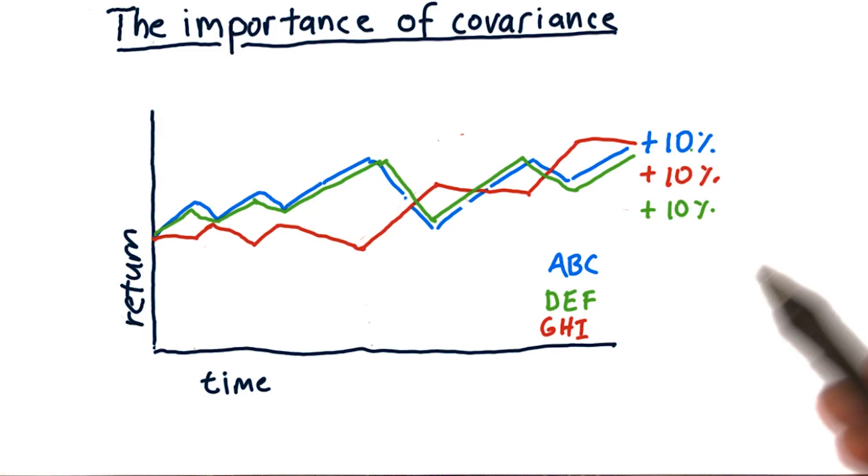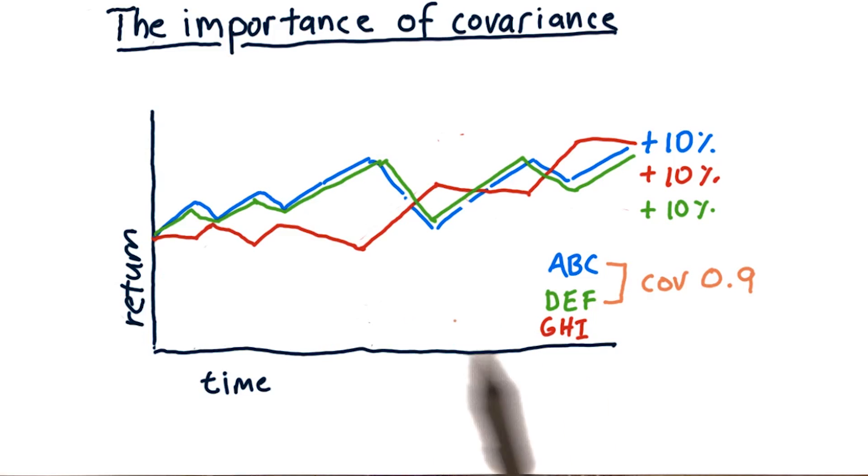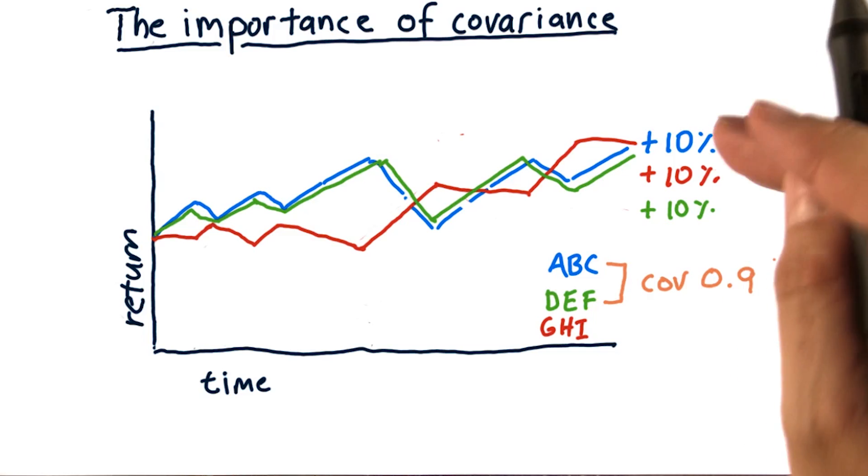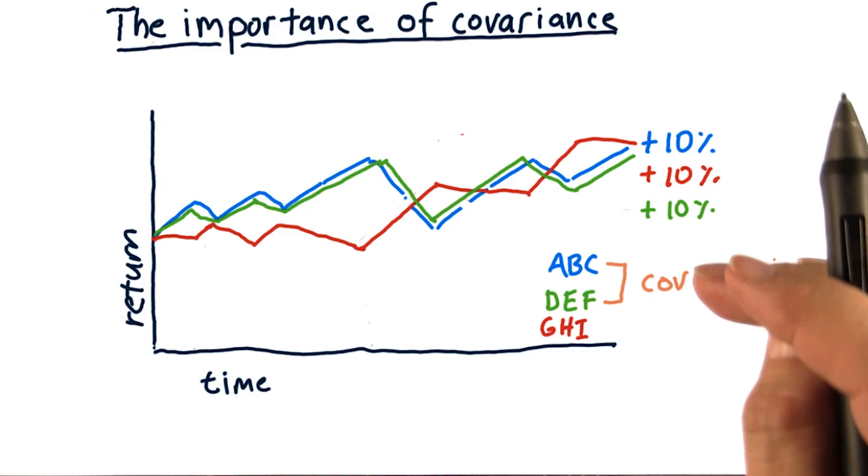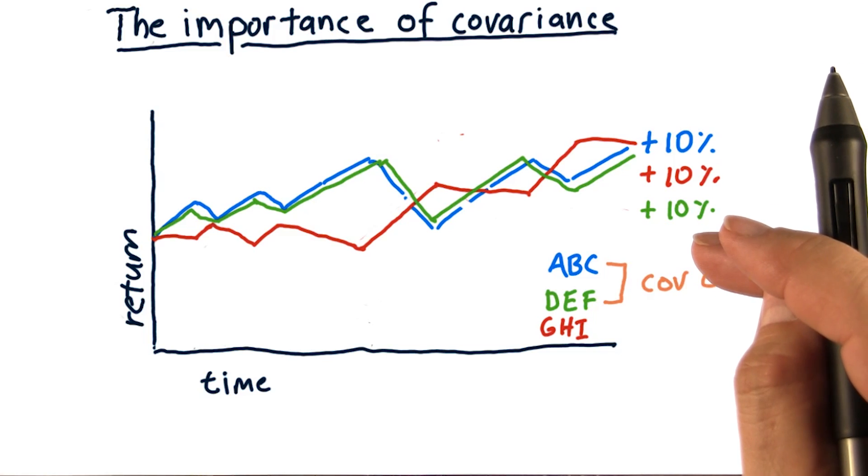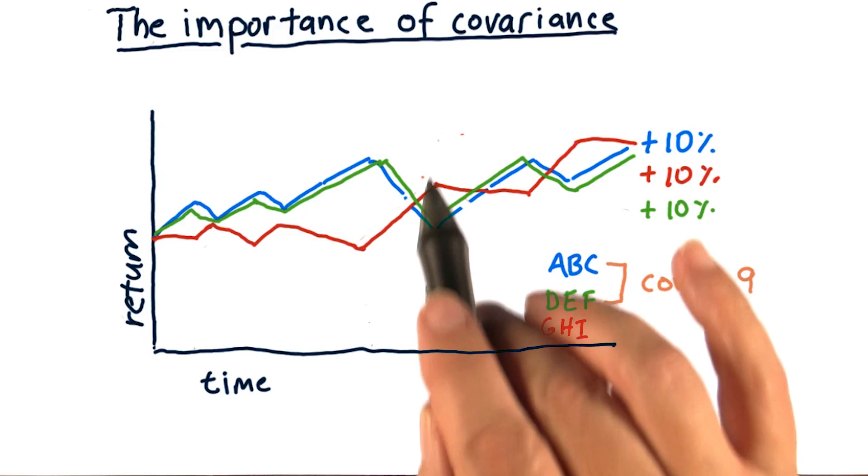What is the best portfolio we can build by combining these three different stocks? Let's consider their covariance or how they move together for a moment. ABC and DEF move very similarly. And if we were to measure their covariance, this is the covariance of daily returns, which if you're just looking at one stock versus another, that's the same as the correlation coefficient of their daily returns. So 0.9 means that they move very closely to one another.